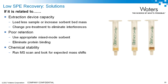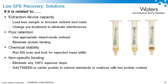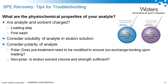For chemical stability, there are many known instabilities in amino acids resulting in known changes in m/z values. You can run an MS scan and look for expected mass shifts. Nonspecific binding is absolutely ubiquitous in protein and peptide analyses — ideally eliminate any 100% aqueous samples when dealing with stickier peptides. Adding a carrier protein is critical if you're working with solvent standards or low protein content matrices. For protein binding, if your peptide is highly bound to a plasma protein, you may need aggressive measures like denaturation or aggressive organics or modifiers.